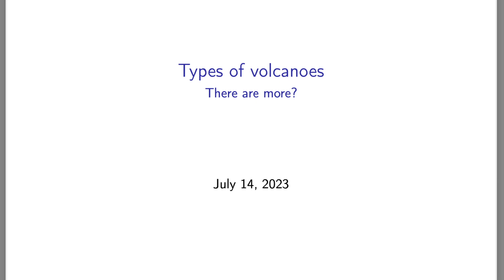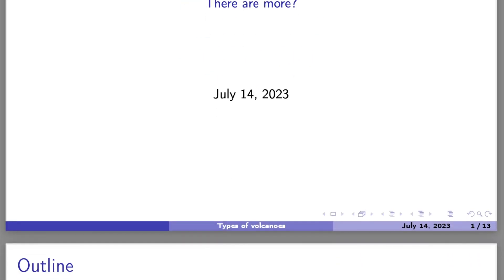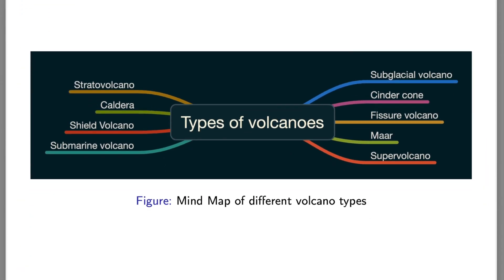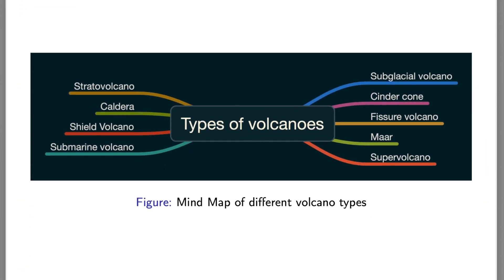There's more than that typical textbook example of the conical shaped volcano — there are different types. So I'm just going to give a short outline of the different types. We've got stratovolcanoes, caldera, shield volcanoes, submarine volcanoes, subglacial, cinder, and so on and so forth. We'll be talking about these nine different types of volcanoes today.